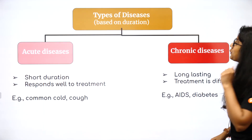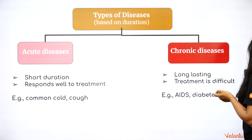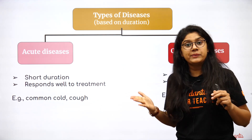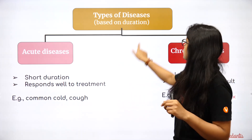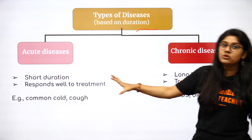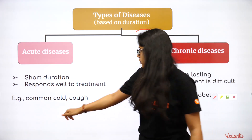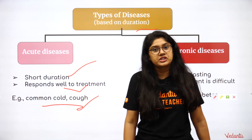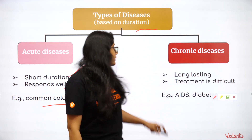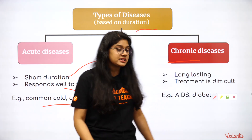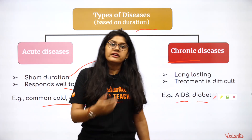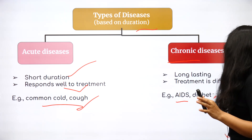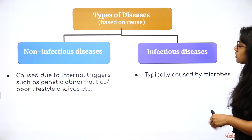Let's talk about disease types. We can differentiate diseases based on two things: duration and how the infection spreads. Based on duration, we have acute and chronic diseases. Acute diseases last for a very short time — like the common cold or a cough — and respond well to treatment. Chronic diseases are long-term, like AIDS or diabetes, and present major challenges in treatment.